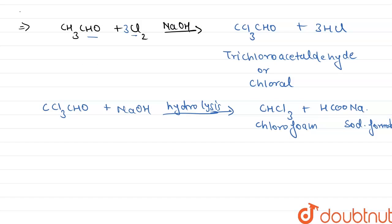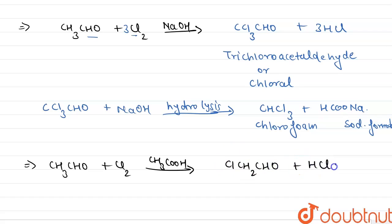In presence of acid, the reaction can be stopped at the monohalogenation stage. Therefore, the reaction is: acetaldehyde CH3CHO reacts with Cl2 in presence of acid, that is acetic acid, to produce alpha-chloroacetaldehyde, that is ClCH2CHO, plus a molecule of HCl. This is alpha-chloroacetaldehyde.